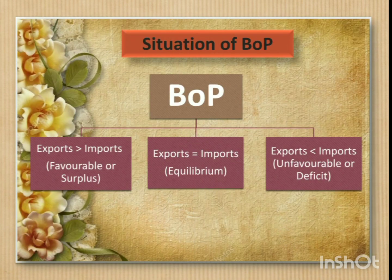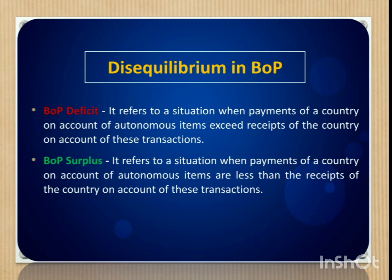Autonomous items are those transactions which are done in consideration of profit, while accommodating items are done in order to correct BOP imbalance. Autonomous items involve transfer of goods and services from country, while accommodating items involve movement of official reserves. Regarding the situation of balance of payment: if export is greater than import, then we have a favorable or surplus balance of payment. If export is less than import, then we have an unfavorable or deficit balance of payment. And if export is equal to import, then balance of payment is in equilibrium. Balance of payment is always in balance but only in accounting sense. In general, balance of payment is said to be in disequilibrium when there is either deficit or surplus. Balance of payment deficit refers to a situation when payments of a country on account of autonomous items exceed receipts of the country on account of these transactions — simply, receipt is less than expenditure.